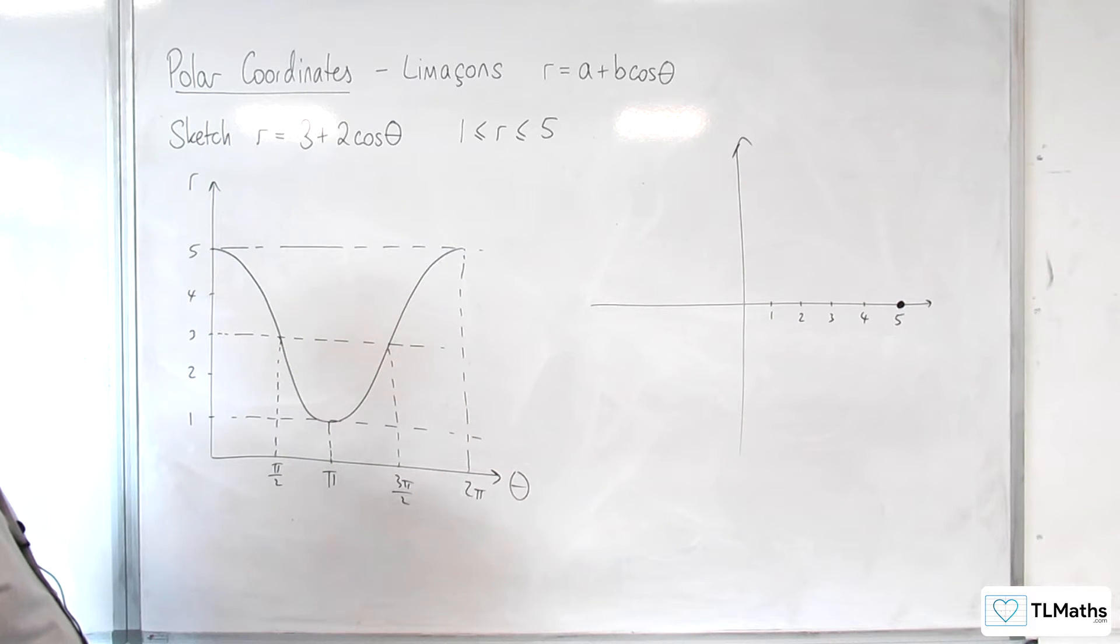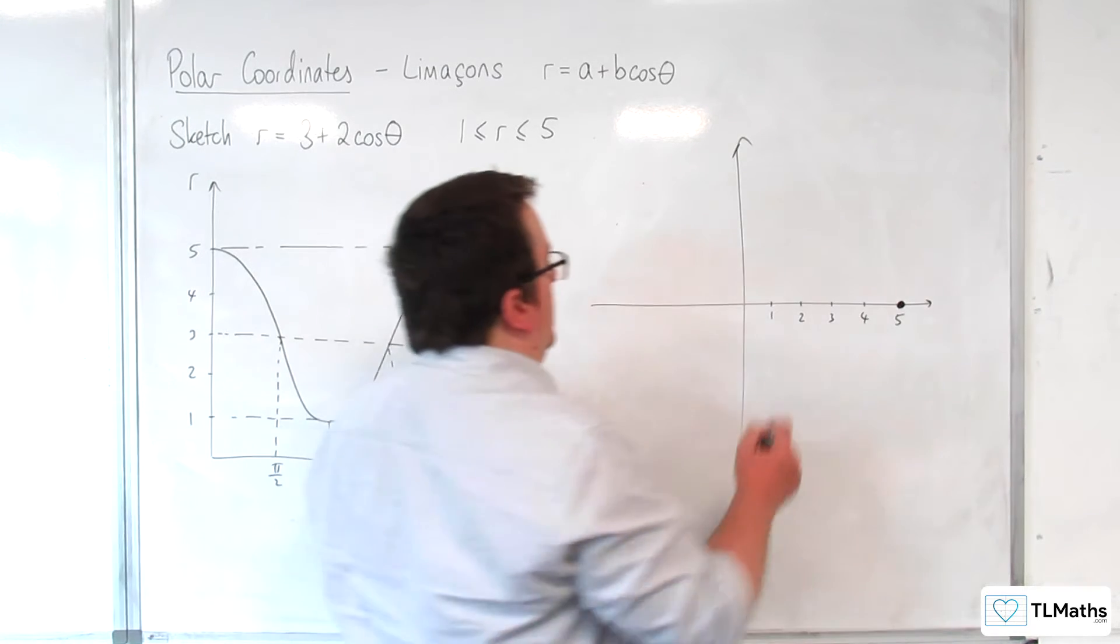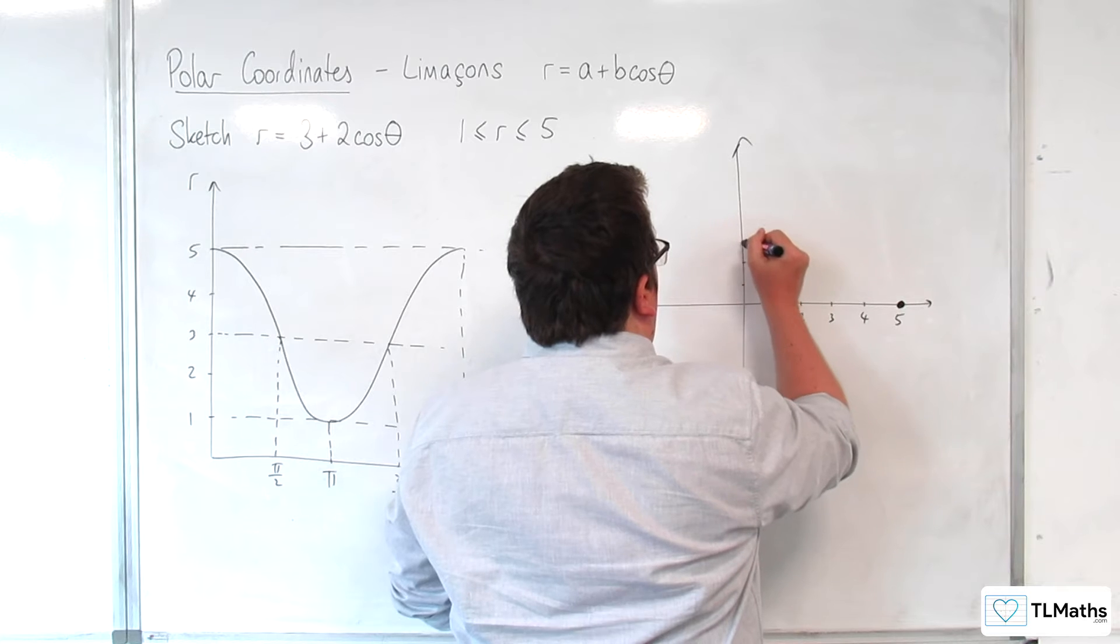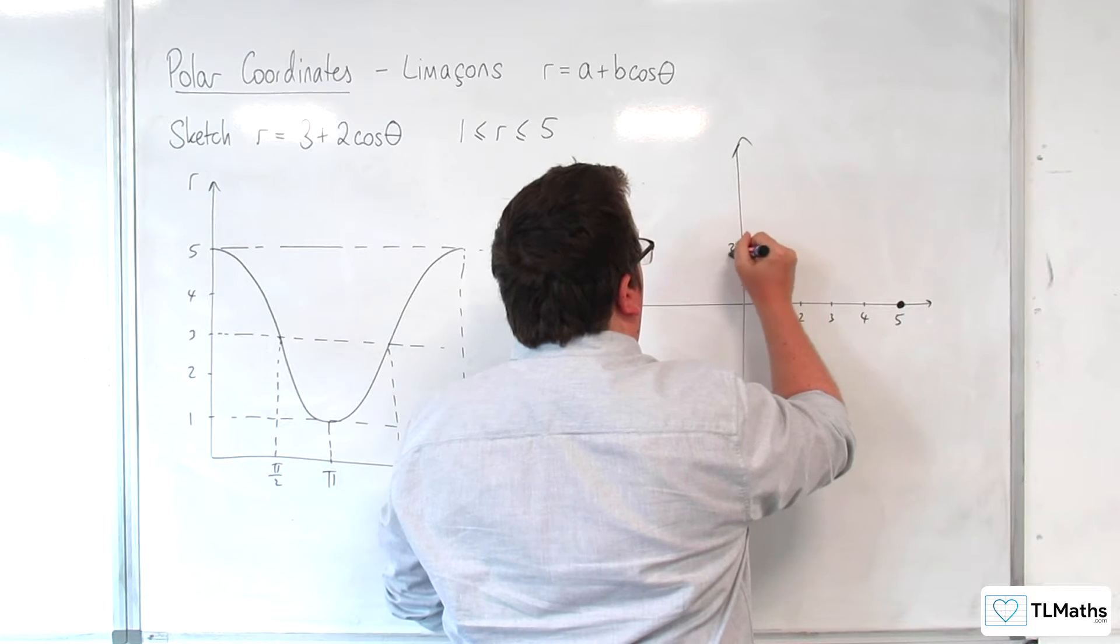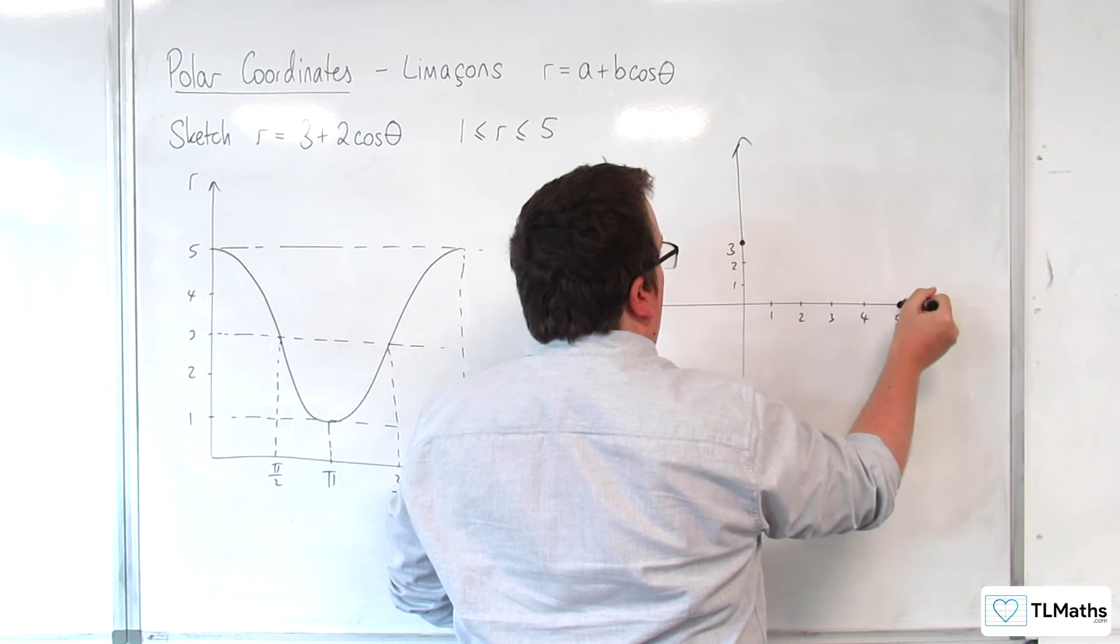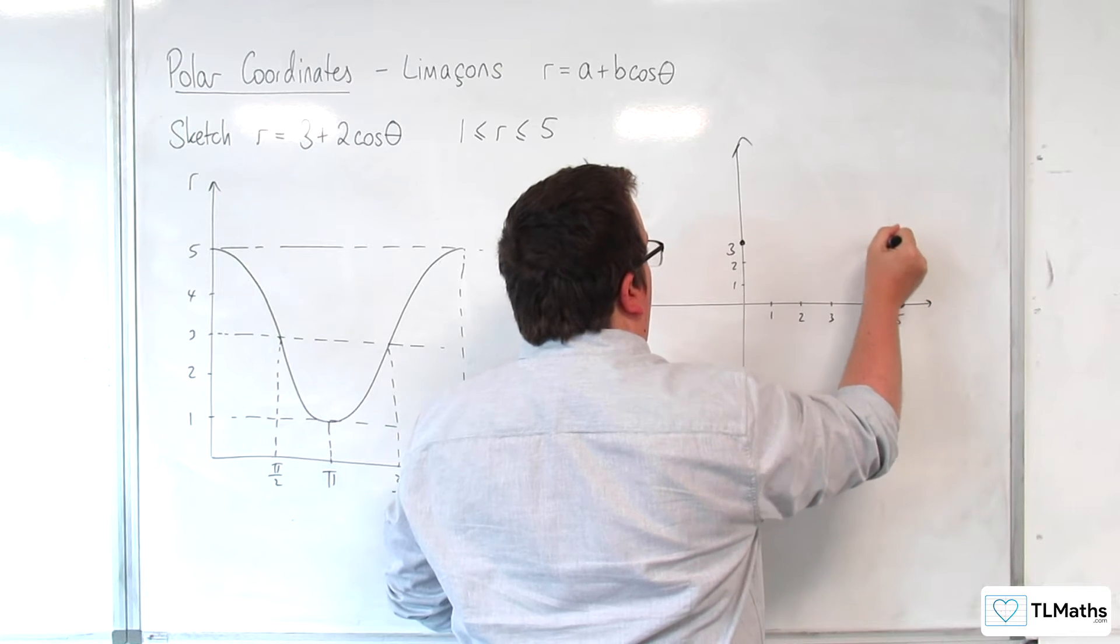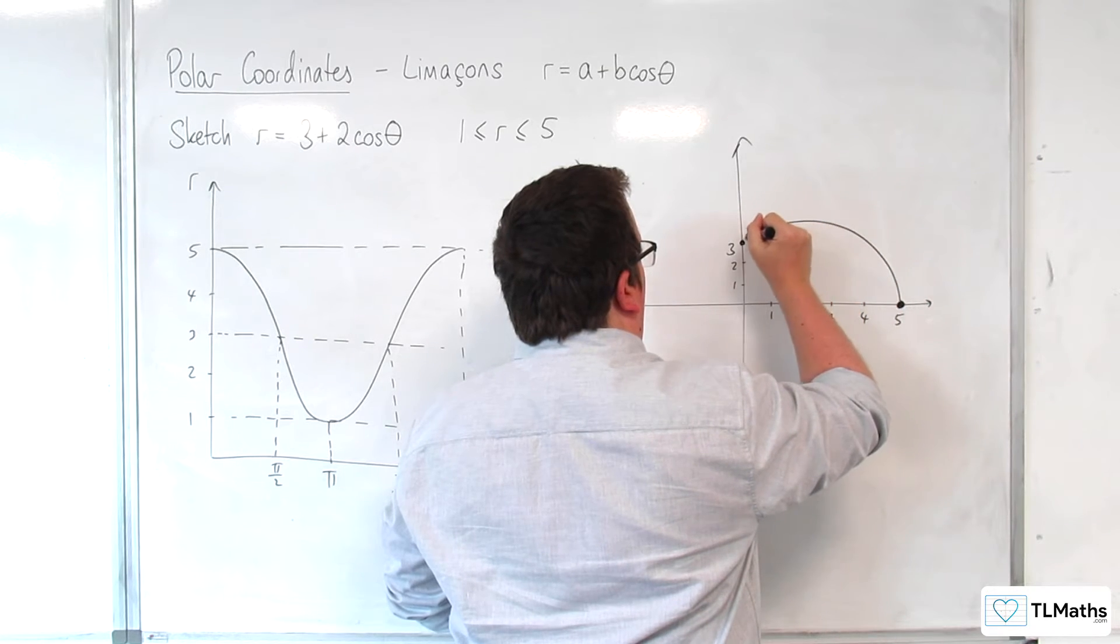And when we get theta is pi over 2, we're going to be at 3. So 1, 2, 3, and so the curve's coming around like so.